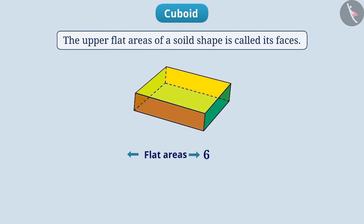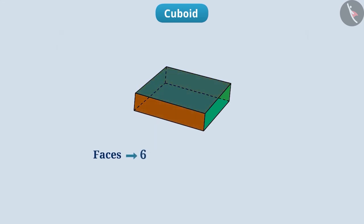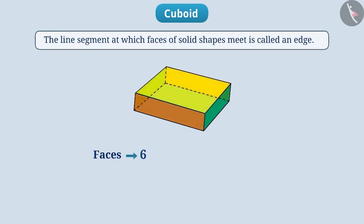The flat area of a solid shape is called its faces. Hence, there are total of six faces in the cuboid. Now, look at the intersection of any two faces. Here, you will see a line segment formed. The line segment at which faces of solid shapes meet is called an edge. If we look here, there are total 12 edges of the cuboid.